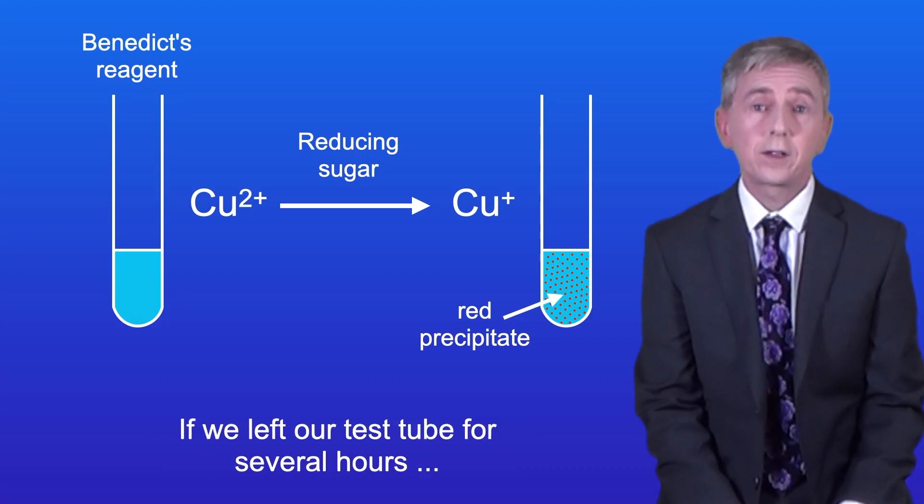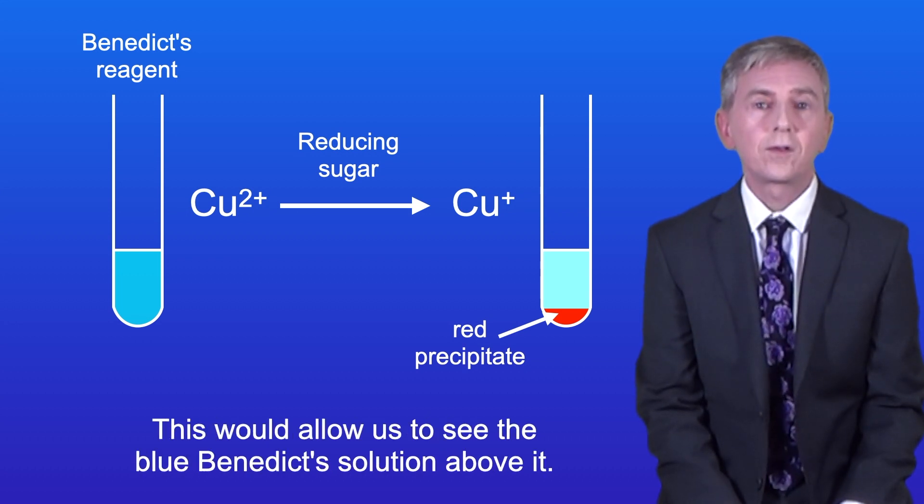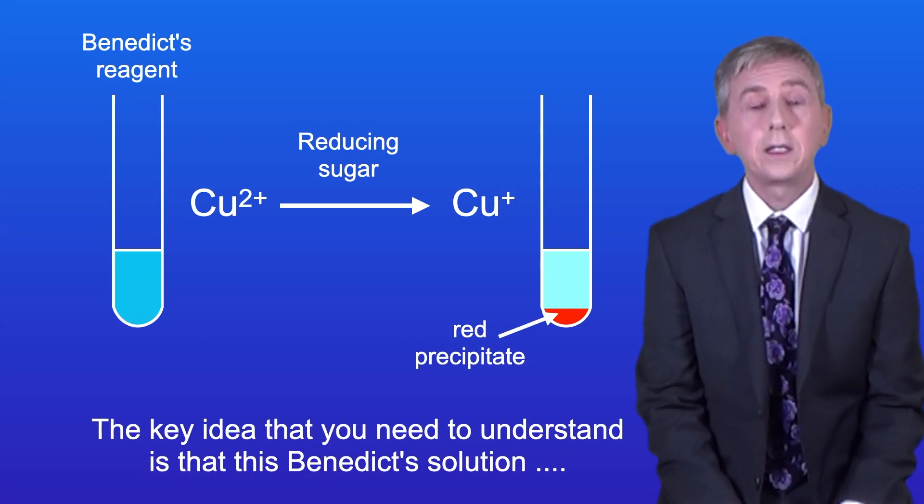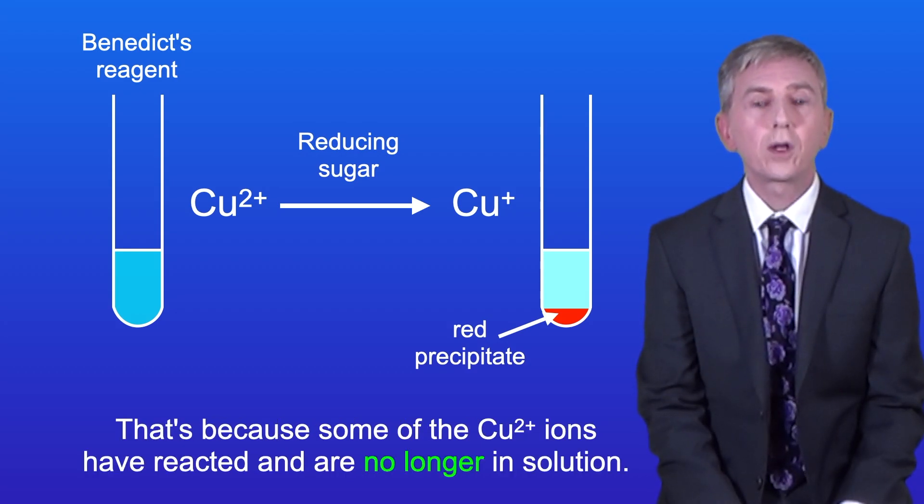Now if we left our test tube for several hours, then the red precipitate would settle on the bottom. And this would allow us to see the blue Benedict's solution above it. Now the key idea you need to understand is that this Benedict's solution will be less blue than it was before the test. That's because some of the Cu2+ ions have reacted and are no longer in solution.